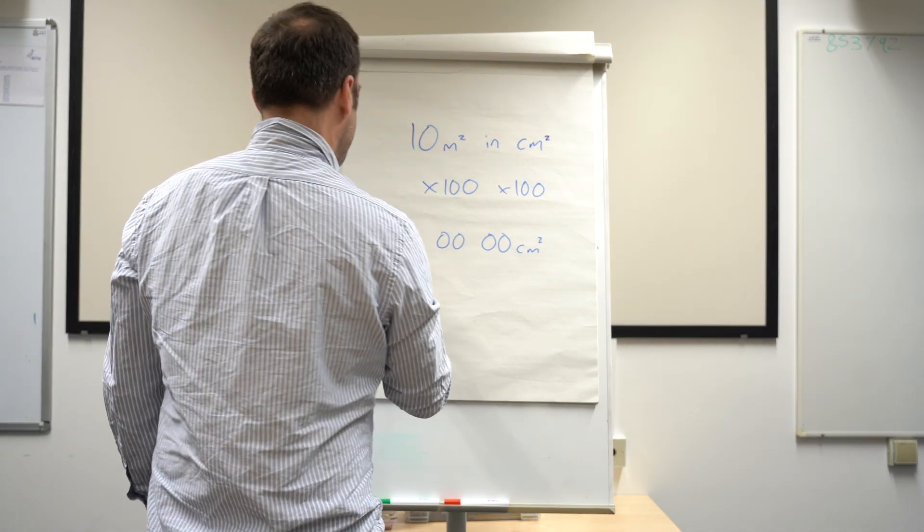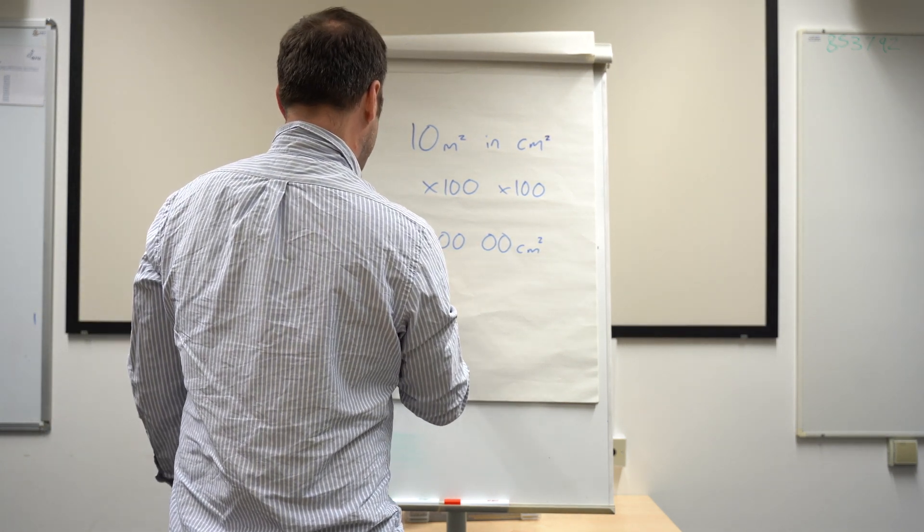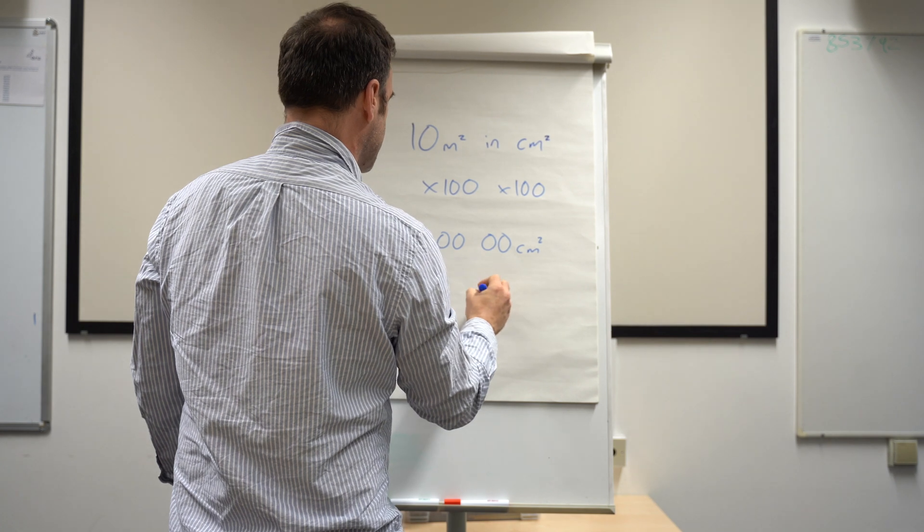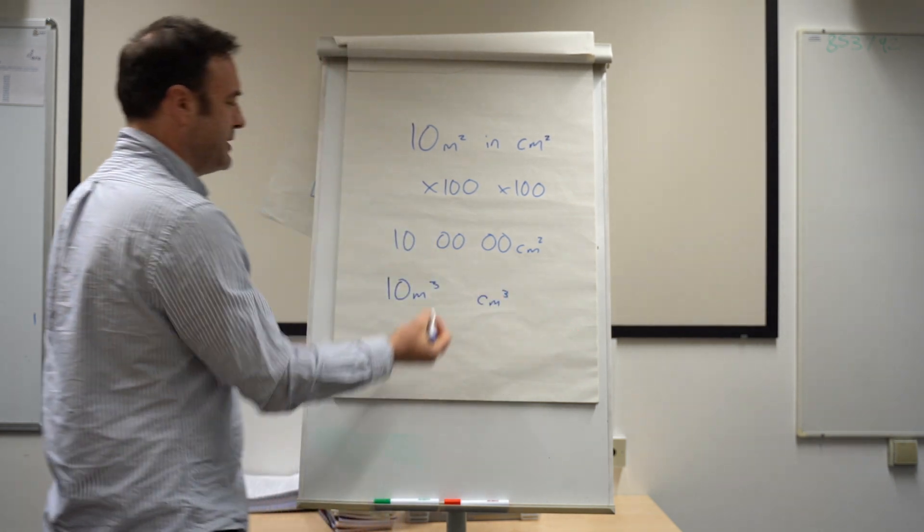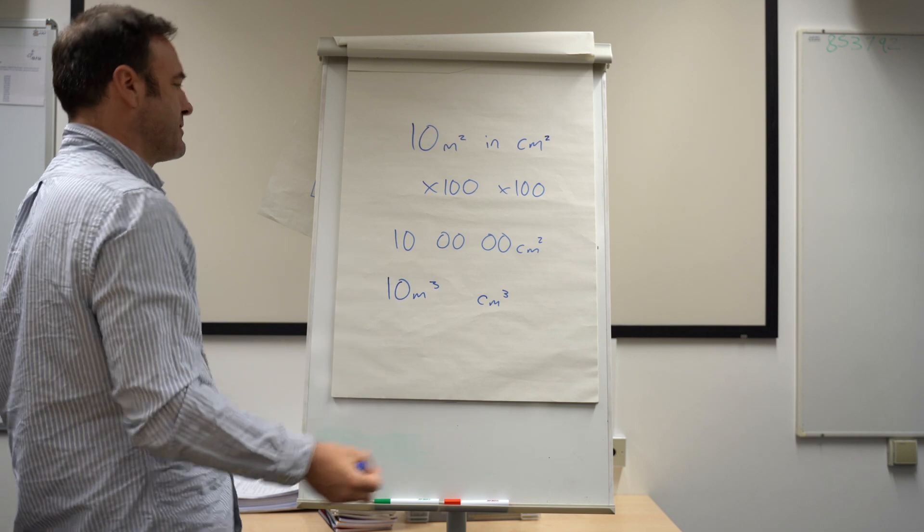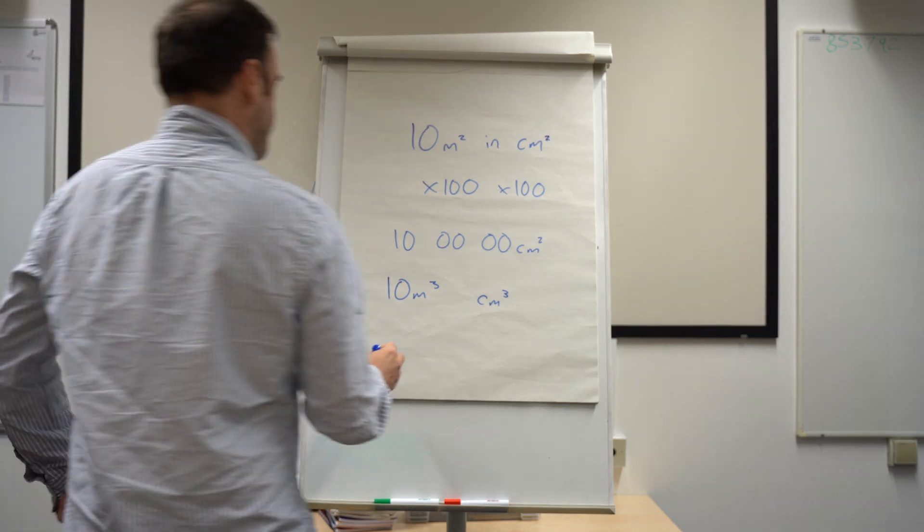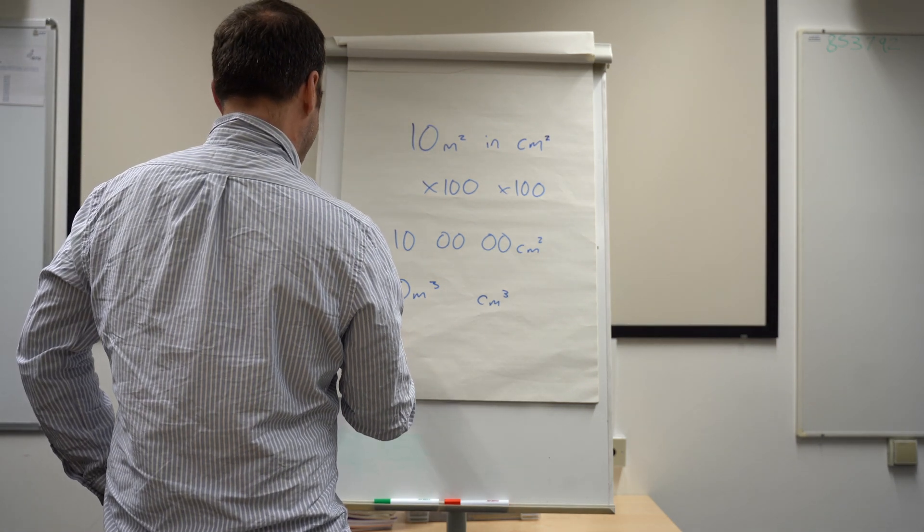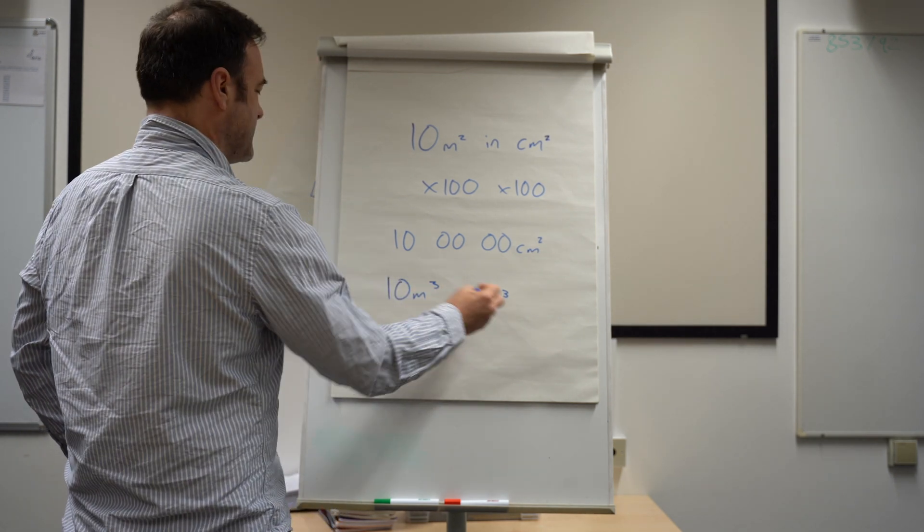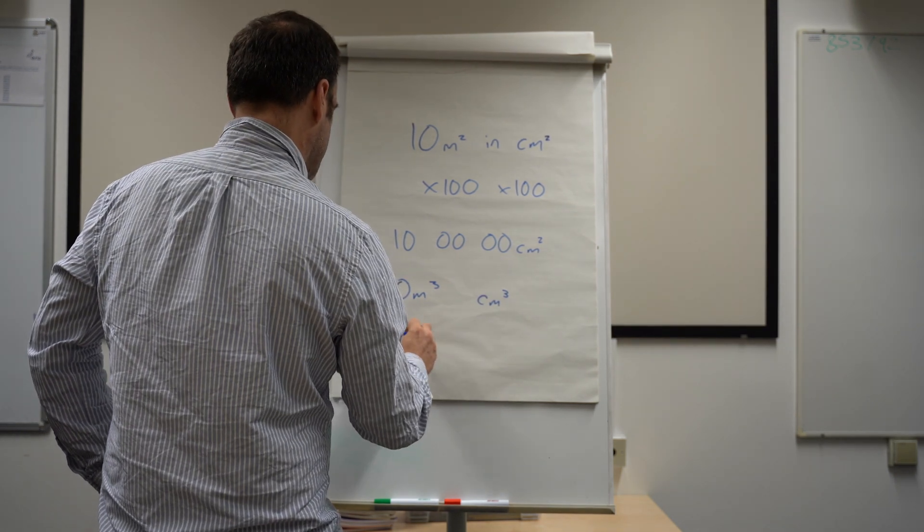Now equally, if we had 10 metres cubed and we wanted it in centimetres cubed, we would do the same thing. We'd look at the power—to the power of 3, or cubed. So if it was 10, we'd have 10, and because it's centimetres, 100, three zeros.